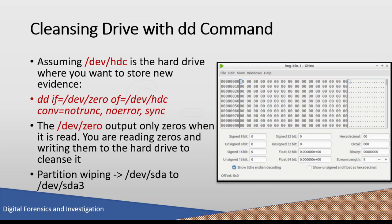Various operating systems use different conventions for partition naming. In Linux, a numbering system is used for partitions. For example, if SDA represents the whole drive, SDA1 represents the first partition, SDA2 the second, and SDA3 the third. So if you want to wipe only the third partition, replace SDA with SDA3 in the command — this will wipe only partition 3 instead of the entire hard drive.